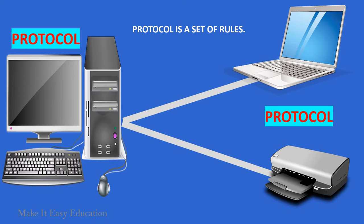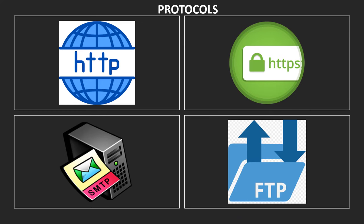A protocol is a set of rules that are agreed upon by both the sender and receiver. Without a protocol, two devices cannot communicate with each other. For example, HTTP and HTTPS are the two protocols used by web browsers. SMTP protocol is used by email services connected to the internet. FTP is a standard network protocol used for the transfer of computer files on a computer network.